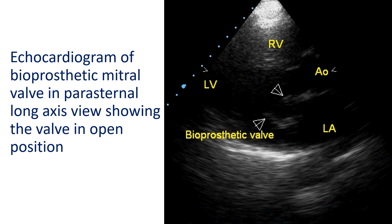Echocardiogram of a bioprosthetic mitral valve in parasternal long axis view showing the mitral valve in open position. Bioprosthetic valves can be with or without stents. This image is from a stented bioprosthetic valve. The porcine valve is fixed in glutaraldehyde, and the low profile stent is made up of an acetyl homopolymer.